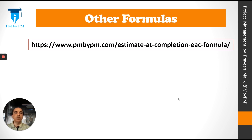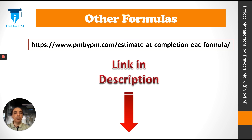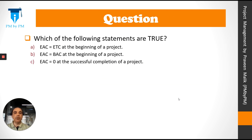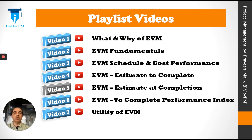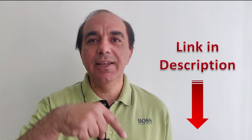I have written a blog post covering some other EAC formulas; you can click on the link in the description below. I have a question for you: which of the following statements are true? EAC equals ETC at the beginning of a project; EAC equals BAC at the beginning of a project; EAC equals zero at the successful completion of a project. Please comment below. This was my fifth video in the playlist — you can continue to the next video, and if you want to download this PPT, please click on the link in the description below.